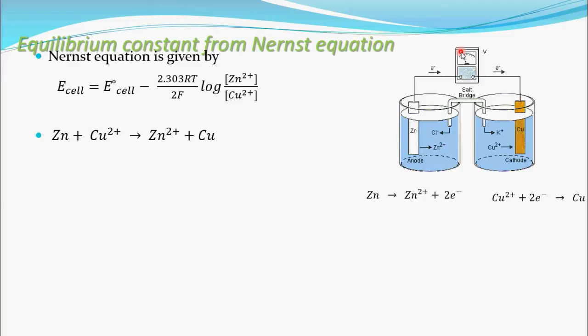See as reaction goes, this zinc will go on converting into Zn²⁺ ions. So concentration of Zn²⁺ ions goes on increasing in the solution. See here. These coming electrons will go on reducing Cu²⁺ ions of the copper sulfate solution into copper.